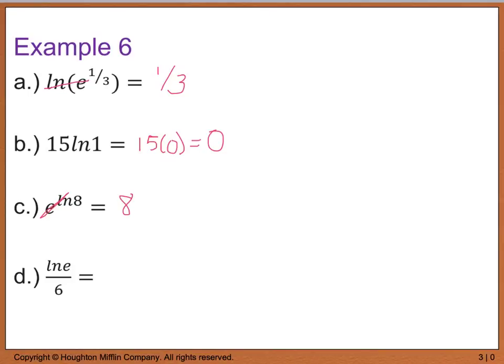For part d, I'm taking the natural log of e, so that cancels out and leaves me with 1, and I still have my 6 in the denominator, so I end up with 1 sixth. Again, these are just using the properties from the previous slide.